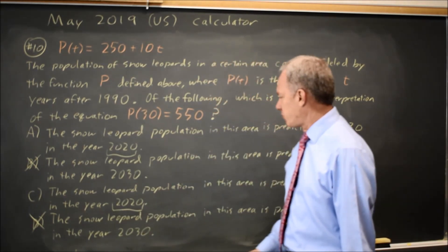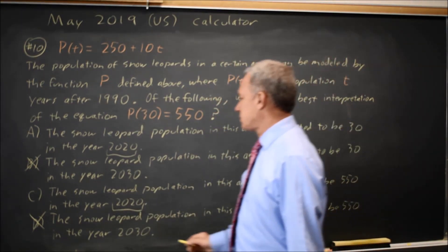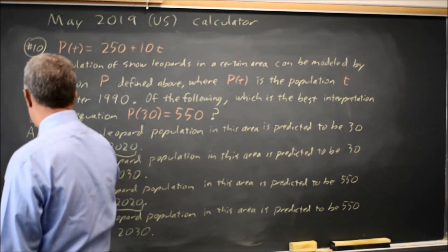And P(T) is 550, so the population is predicted to be 550, which is choice C, not choice A.